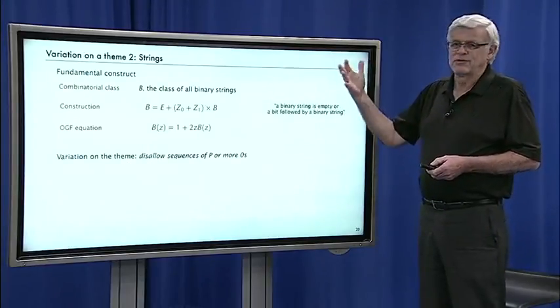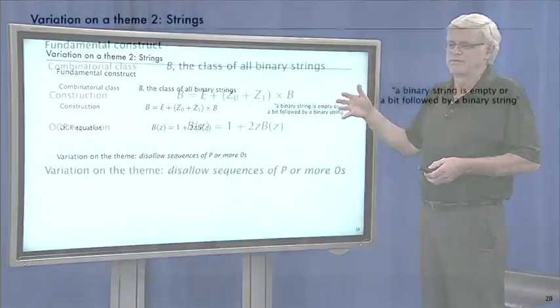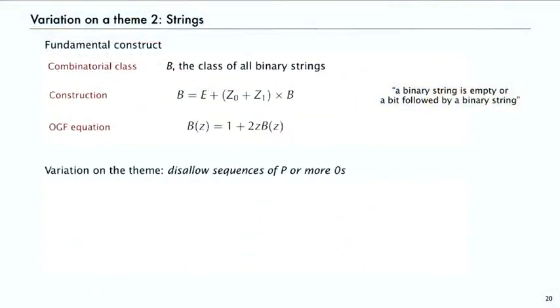Another example of that is strings. We start with a very basic fundamental construct, say the class of all binary strings. Well, a binary string is either empty, or it's a zero or one bit followed by a binary string. That immediately gives an OGF equation, b of z equals 1 plus 2z times b of z. And that immediately leads to the solution, b of z equals 1 over (1 minus 2z), or the number of binary strings is 2^n. But then we can have all kinds of variations on that theme.